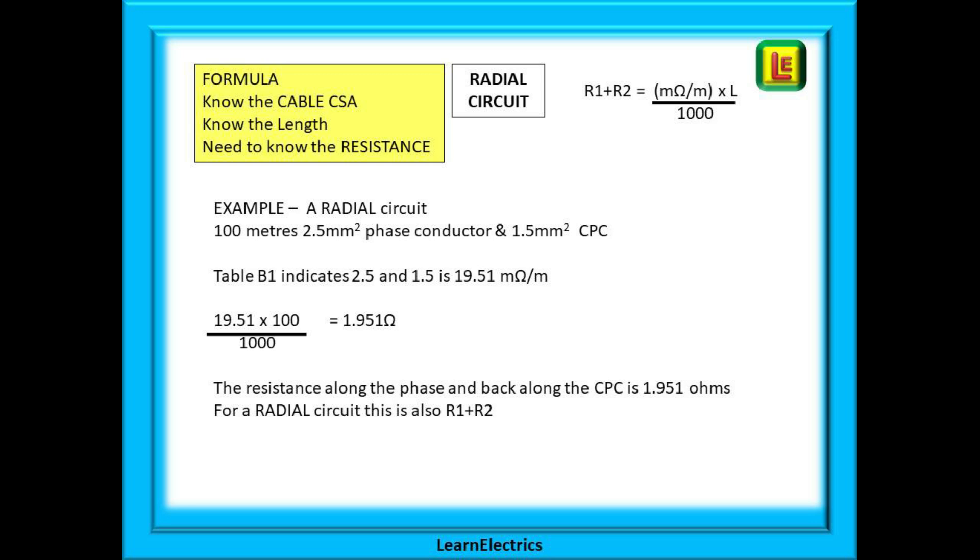When calculating, we're interested in one direction only, not there and back. The numbers in the tables have allowed for this there and back current flow. Now 19.51 milliohms multiplied by 100 meters and divided by a thousand gives 1.95 ohms of resistance.